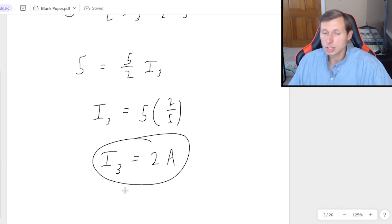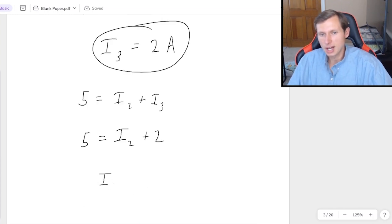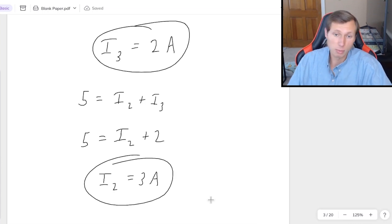If I want I2, which honestly I don't really care because that wasn't the question, I could just use the equation 5 equals I2 plus I3. Since I3 is 2 amps, 5 equals I2 plus 2. So therefore, I2 has to be 3 amps. And there we go, if I wanted that current.